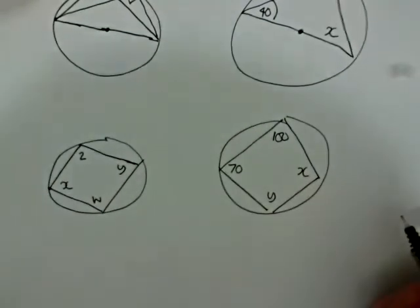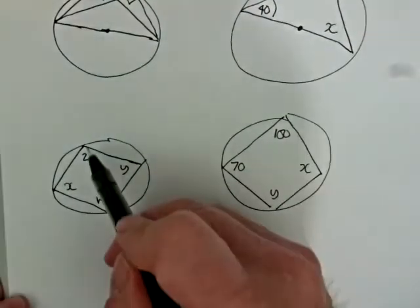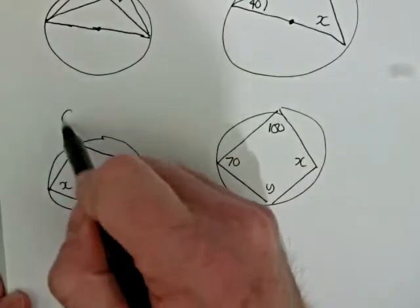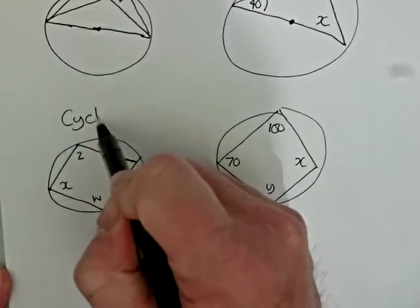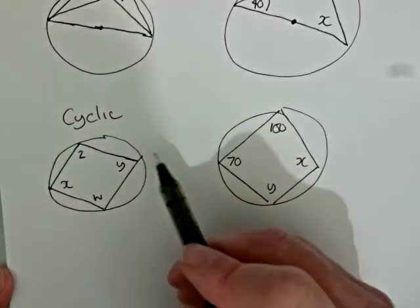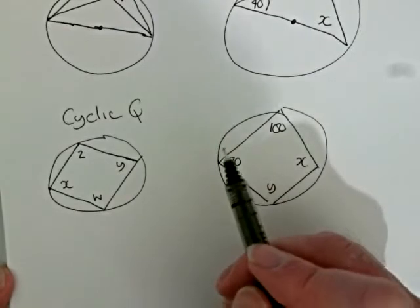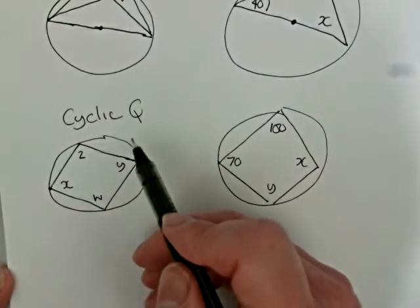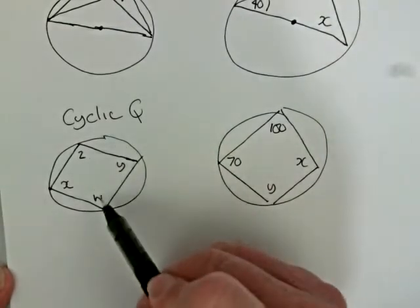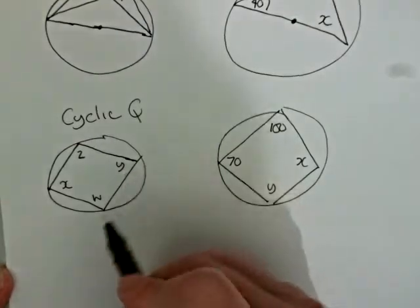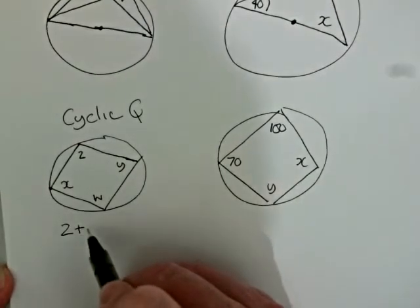Now another fairly straightforward circle theorem is that if we form a cyclic quadrilateral, then the opposite angles in the cyclic quadrilateral add up to 180.